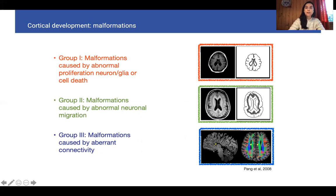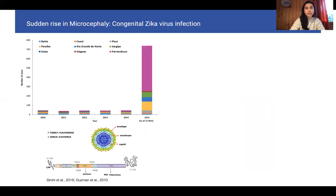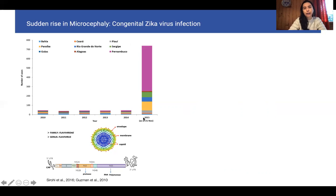Obviously, this is an oversimplification of all cortical development malformations. Sometimes these malformations happen independently, but in the patient they can also happen together, like a syndrome. This is what happened in 2015, where there was a sudden rise of microcephaly in Brazil — a severe reduction of the brain detected in the northeast of Brazil — and very fast this was associated with the emergence of a new epidemic: the Zika virus.